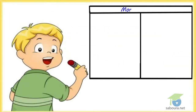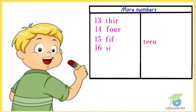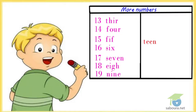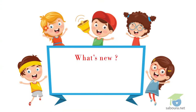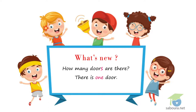More numbers. Thirteen, fourteen, fifteen, sixteen, seventeen, eighteen, nineteen. What's new? How many doors are there? There is one door. There are two doors.